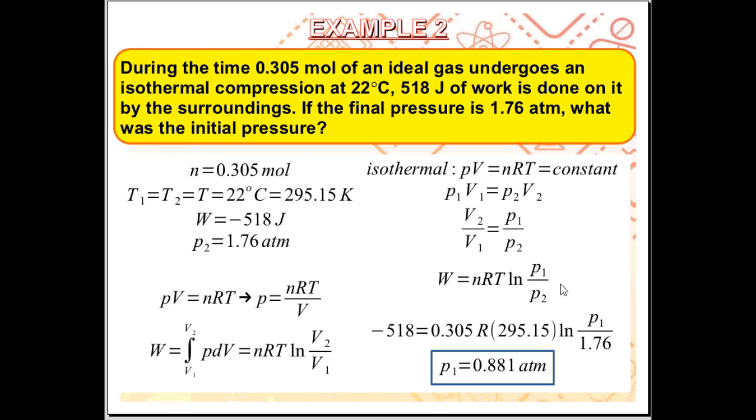If we now look at the known values, all the variables are known except for initial pressure P1. Then, we are able to calculate P1 to be 0.881 atm.